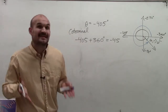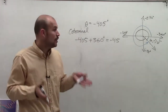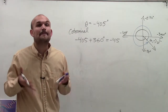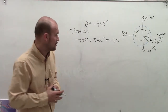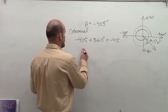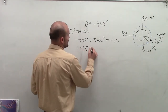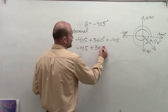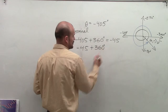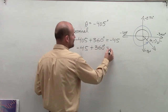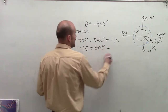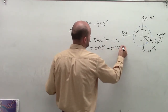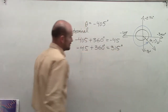That's still a coterminal angle, but it's still not a positive coterminal angle. So I'm going to take negative 45 degrees and add it again to 360 degrees. This time I get 315 degrees.